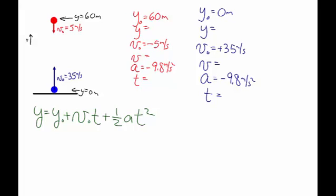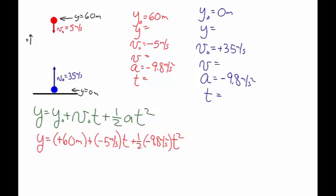And so now I'm going to set up an equation for y as a function of t for both the red object and the blue object, plugging in the values I have in my table. So I have the equation for the height as a function of time for the red object and for the blue object.